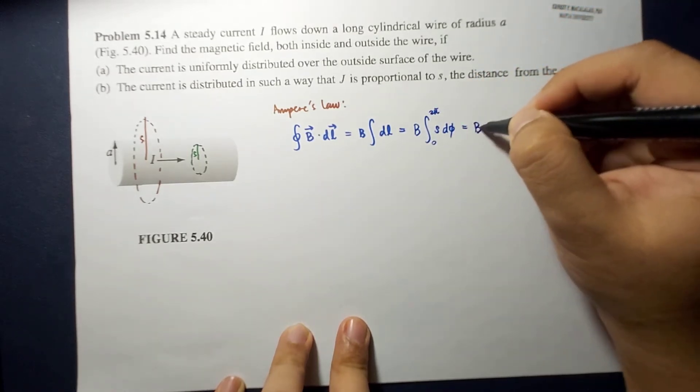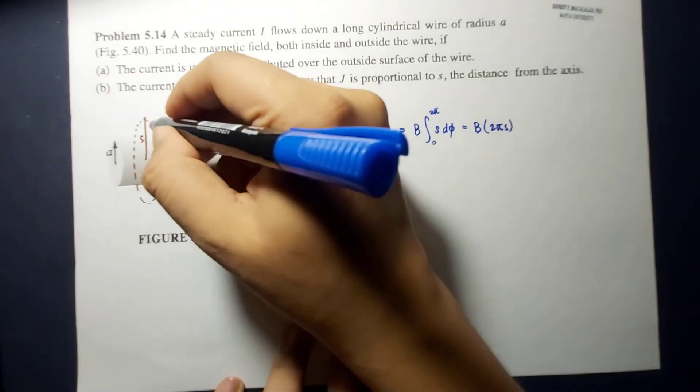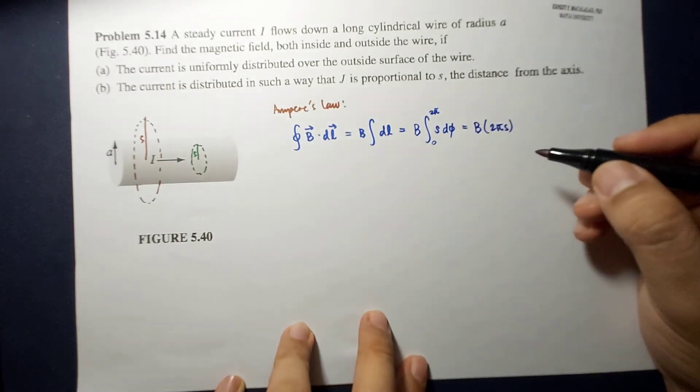So, the end result is B times 2pi S, which is exactly what the circumference of this Amperian loop is. And,